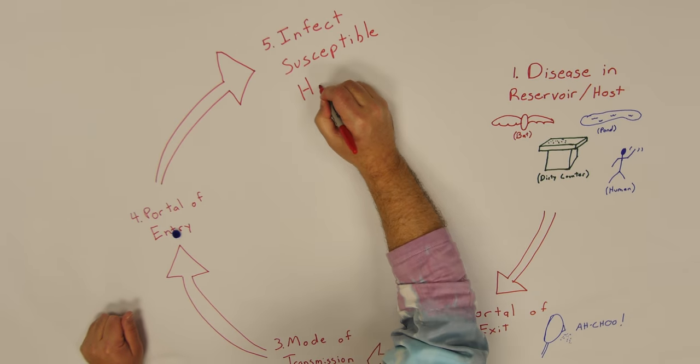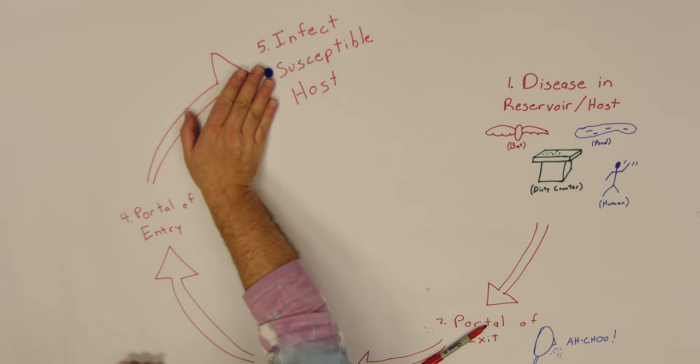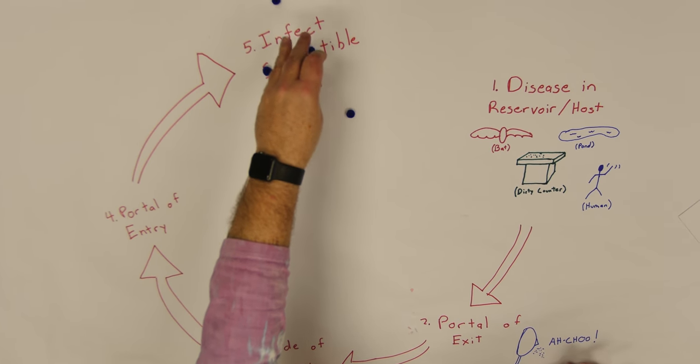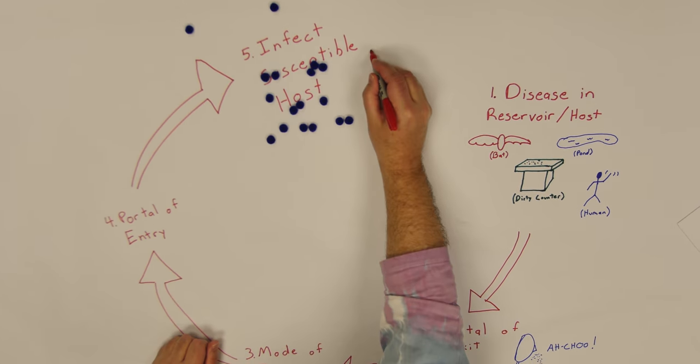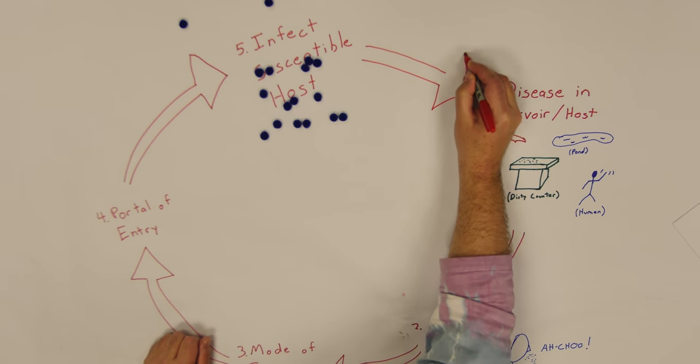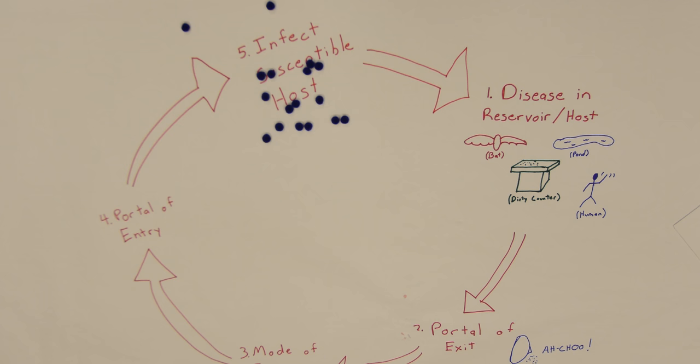And once those germs are inside, it infects a susceptible host. In other words, the pathogen begins to replicate. That's when the host starts feeling sick, which takes us back to the beginning of the cycle, where the pathogens are ready to jump to a new host, hopefully before the current host body kills all the pathogens.